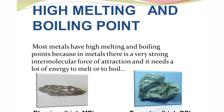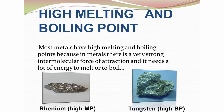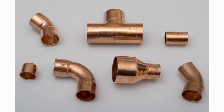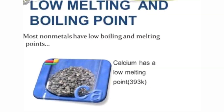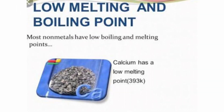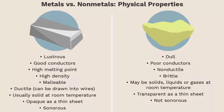Melting and boiling point: Metals generally have high melting and boiling points, which allows metals to be molded into different kinds of shapes. On the other hand, non-metals have low melting and boiling points. These are the physical properties of metals and non-metals.